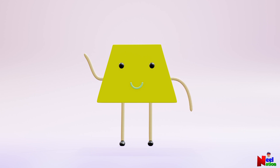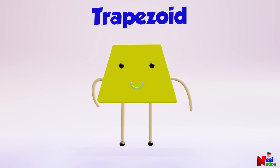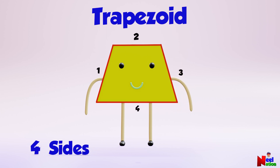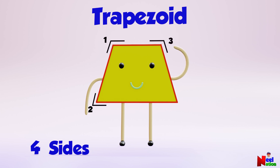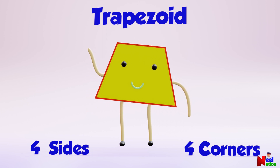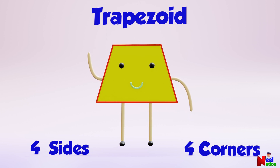Hi, I am a trapezoid. I have one, two, three, four — four sides. And one, two, three, four — four corners. Bye-bye. Bye-bye. Bye-bye.